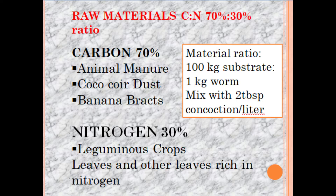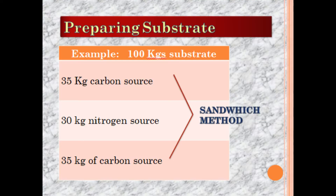For every 100 kilograms of substrate, we are going to put one kilogram of African night crawlers. With every layer of piling up the substrate, we spray water with concoction — two tablespoonfuls of concoction per liter of water. We are going to use the sandwich method to prepare the substrate.